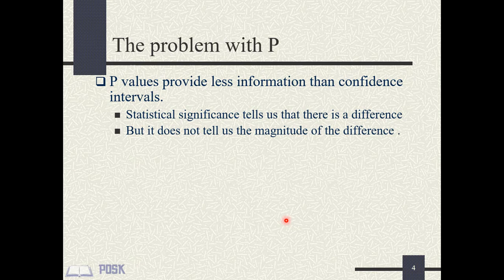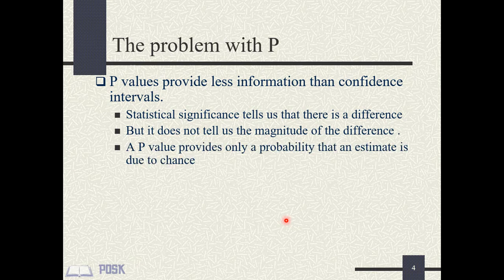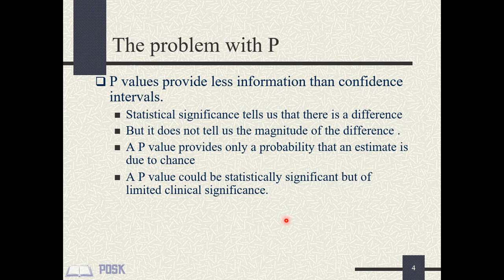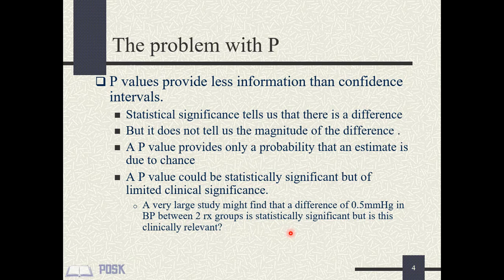The p-value shows there is a difference in the statistics between any two groups, but it doesn't tell us the magnitude of the difference. Simply put, the p-value is nothing but an estimation of probability. Since it does not measure the effect size, you cannot rely solely on p-values for making clinical decisions. For example, a very large study might find that a difference of 0.5 mmHg in blood pressure between two treatment groups is statistically significant.